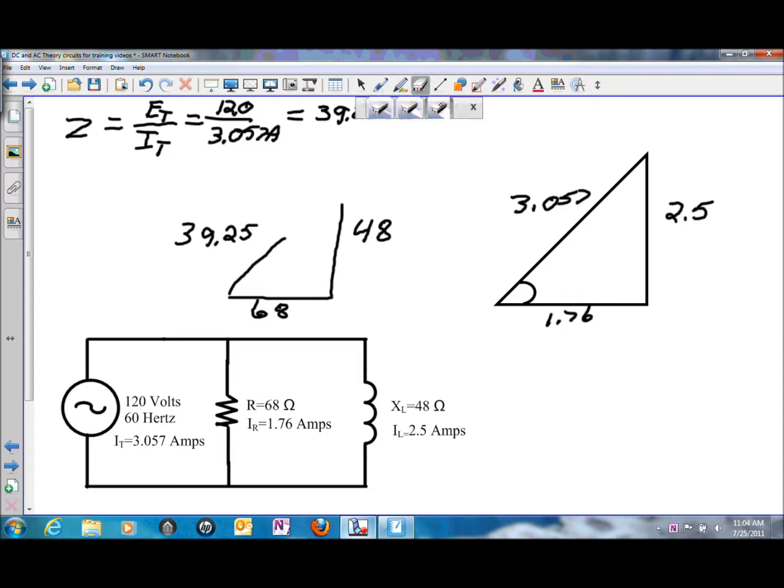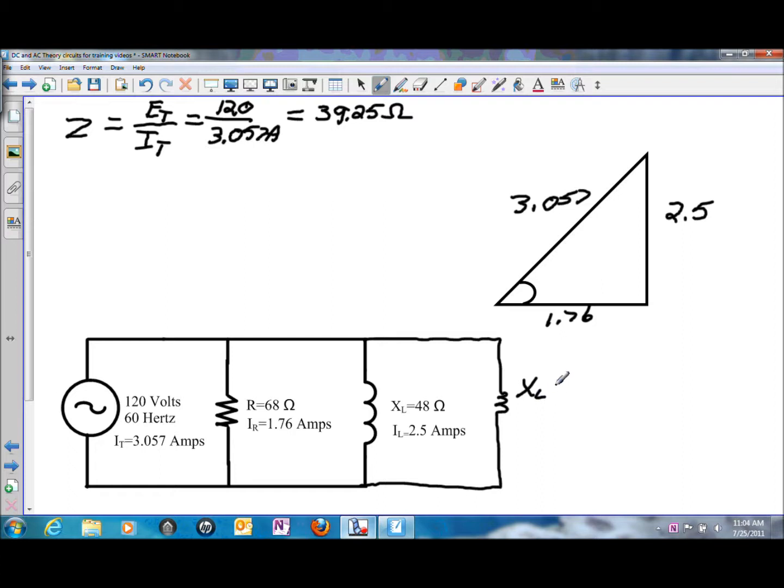So in order to try to further demonstrate this point, if we were to add an additional branch into this circuit, and this applies for both inductors or capacitors in parallel with a resistor, whatever the X of L for the third branch in the circuit is, the combination of the two will have a lower ohm value than 48.